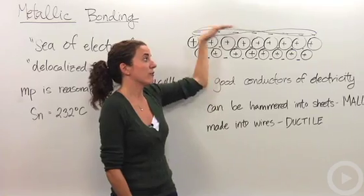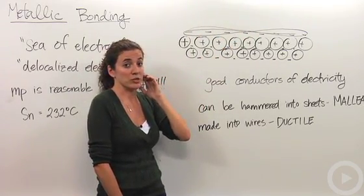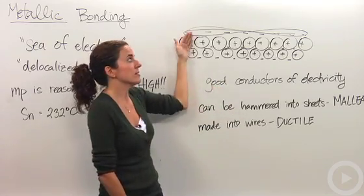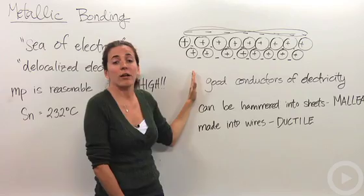Because these negative charges are there and they're flowing, metals are very good conductors of electricity. We know electricity is a flow of electrons and this is basically a flow of electrons. So as you would expect, they are very good conductors of electricity.